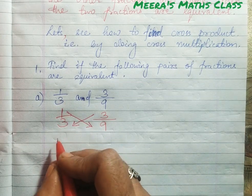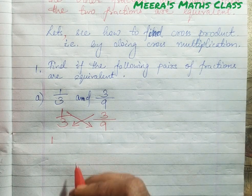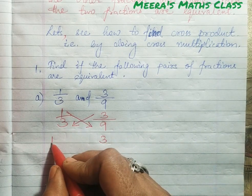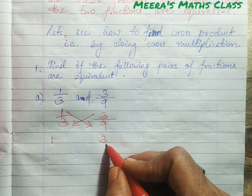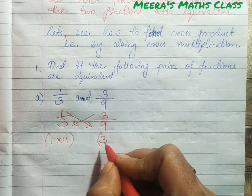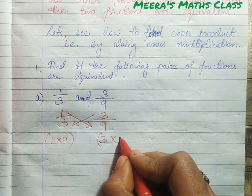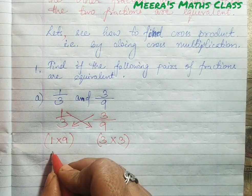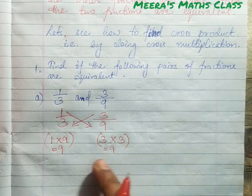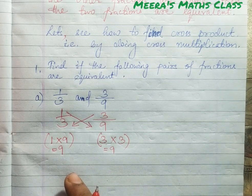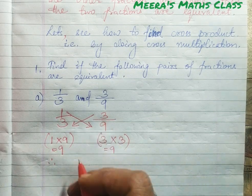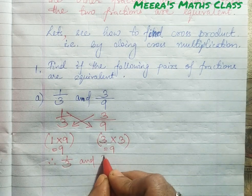Now here we write 1 on the left side — remember children, the numerator side is written on the left. So write 1 here and 3 here. Now 1 is multiplied by 9, giving 9. Then 3 is multiplied by 3, giving 9. So 1×9 = 9 and 3×3 = 9. Both products are the same — yes, both the products are the same.